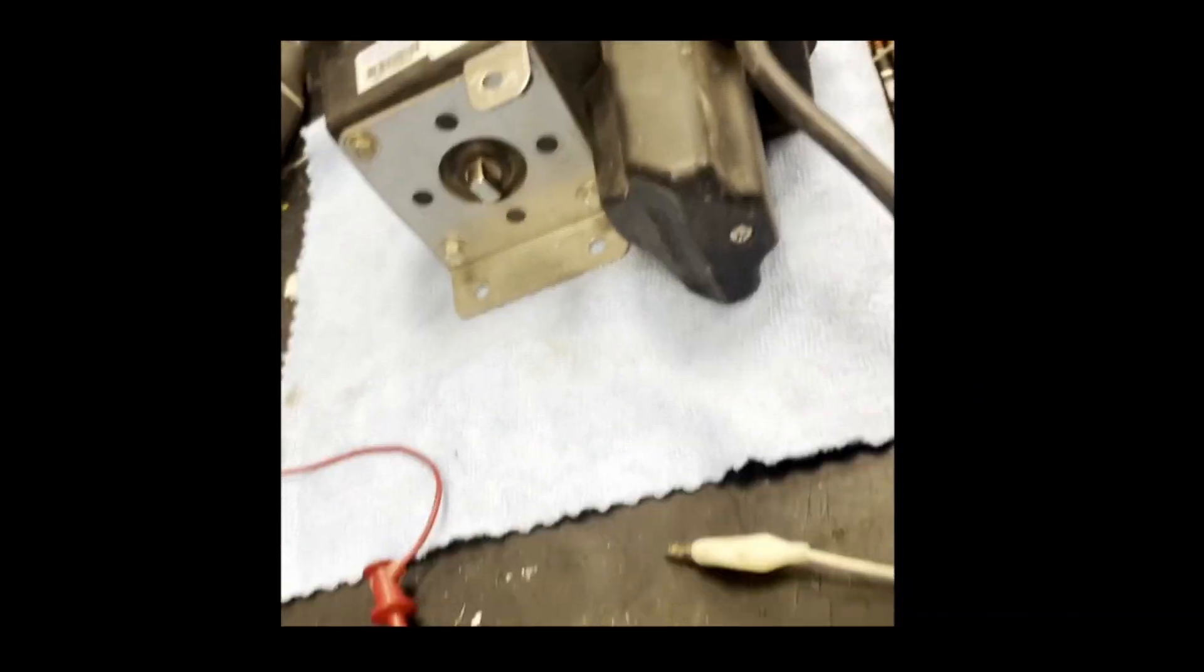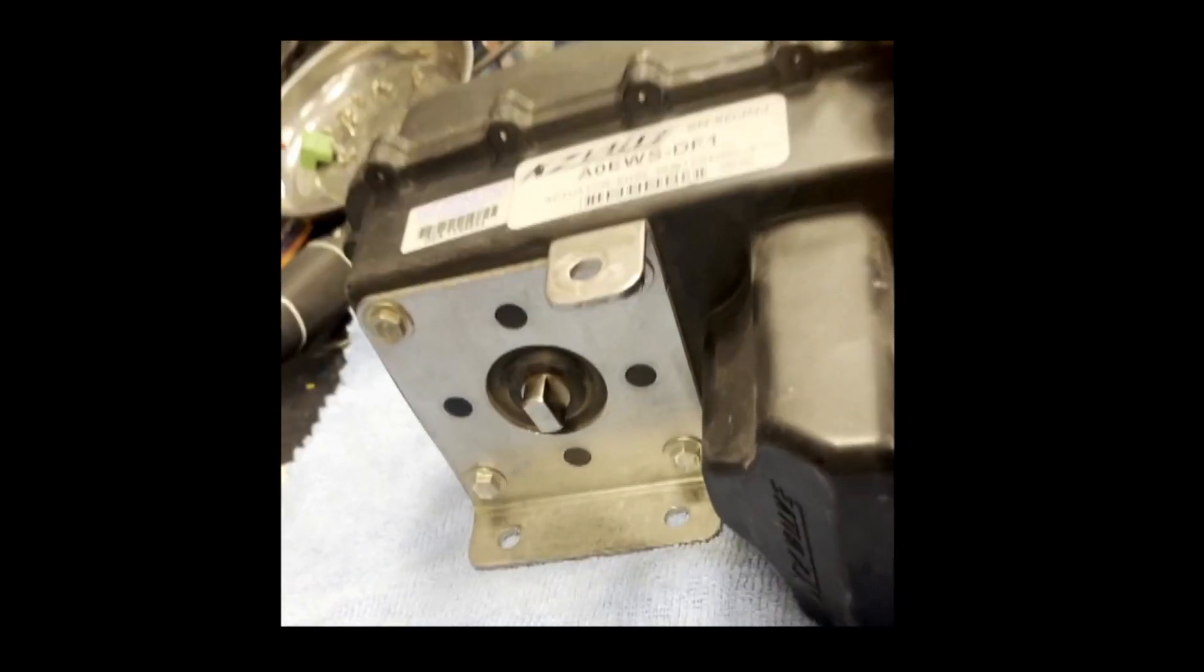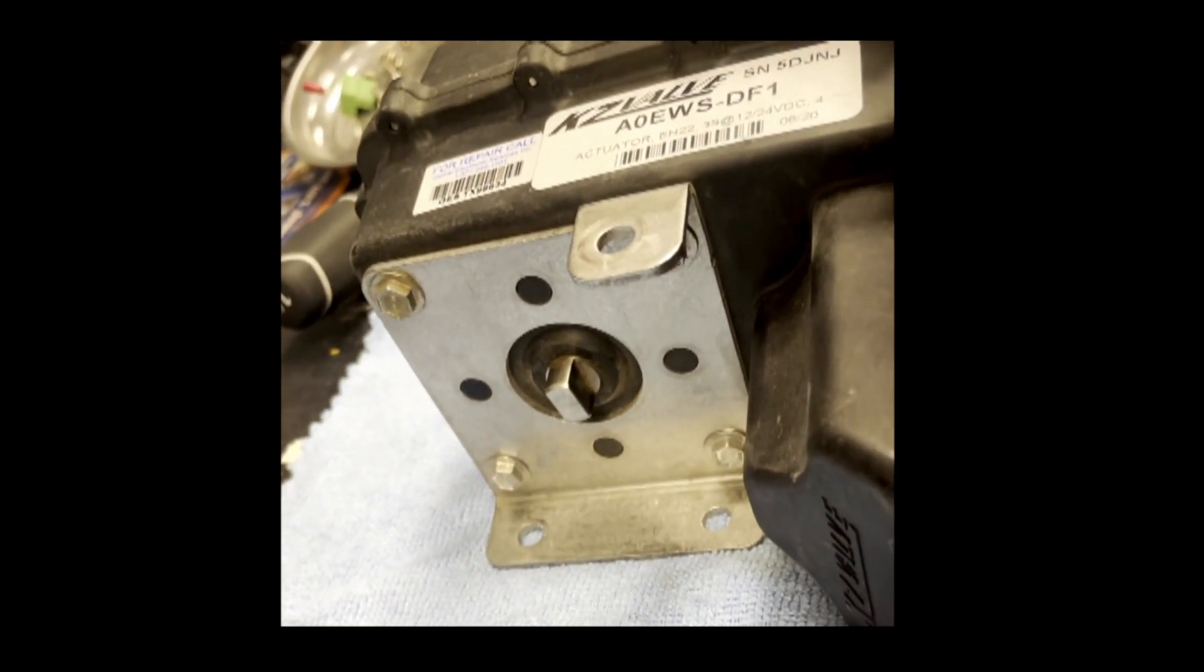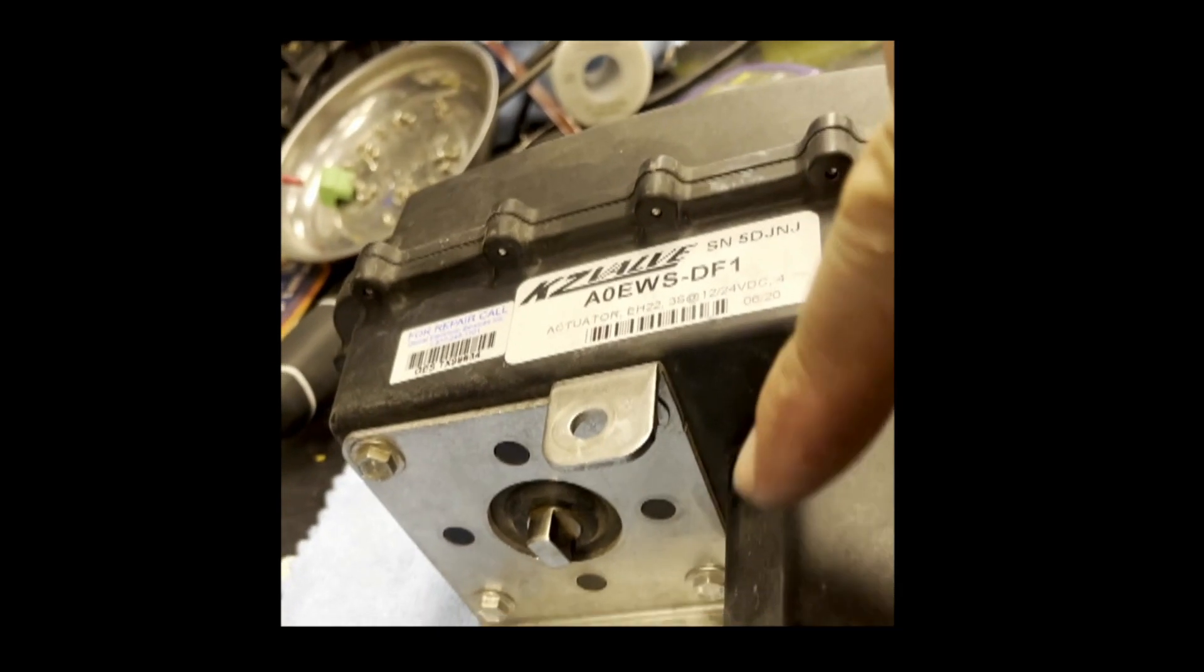When 12 volts is applied to this actuator, it should give us a rotation going 90 degrees one way. And then when we trigger the relay internally with another 12 volts, it should go 90 degrees the other way.